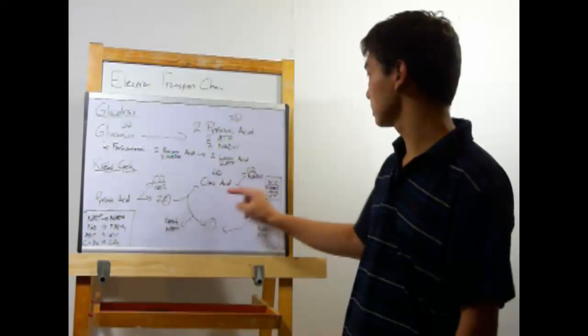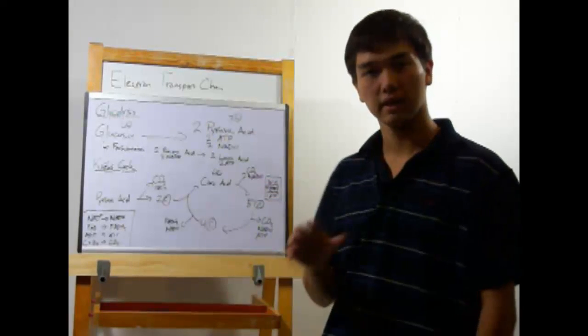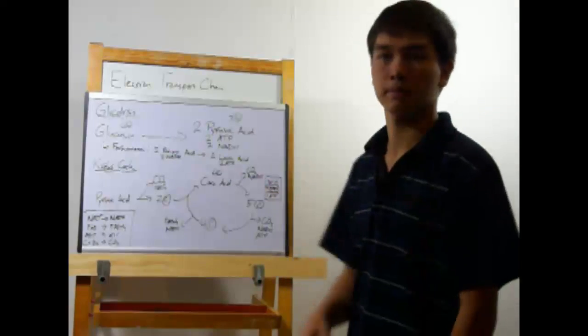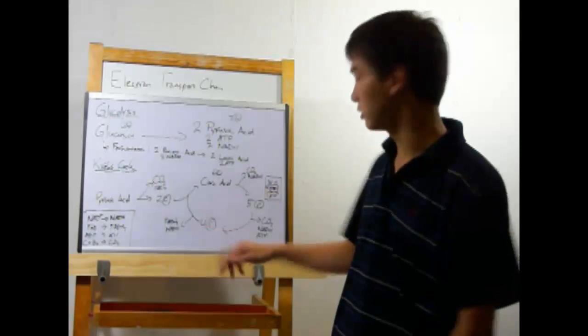A carbon is then lost as CO2 to create CO2 and another NADH is formed. This brings us to a five carbon molecule. Now we're going to flick off another carbon to O2 to create CO2. This also produces an NADH and an ATP. Score! Now we have a four carbon molecule.